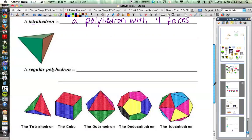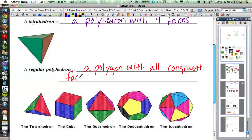A regular tetrahedron is a polyhedron with all congruent faces. And the faces meet at each vertex in exactly the same way.